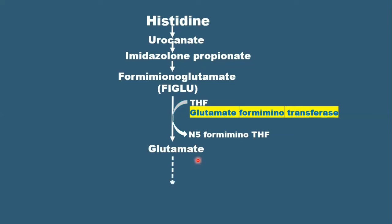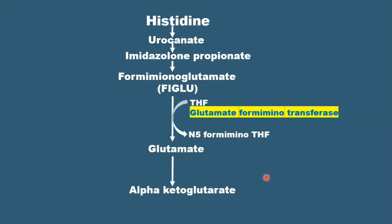Glutamate is then further metabolized into alpha-ketoglutarate. But for the short question, we don't have to write the whole thing — this is just for you to understand how histidine is metabolized and how this reaction occurs. We are only going to focus on answering the short question.